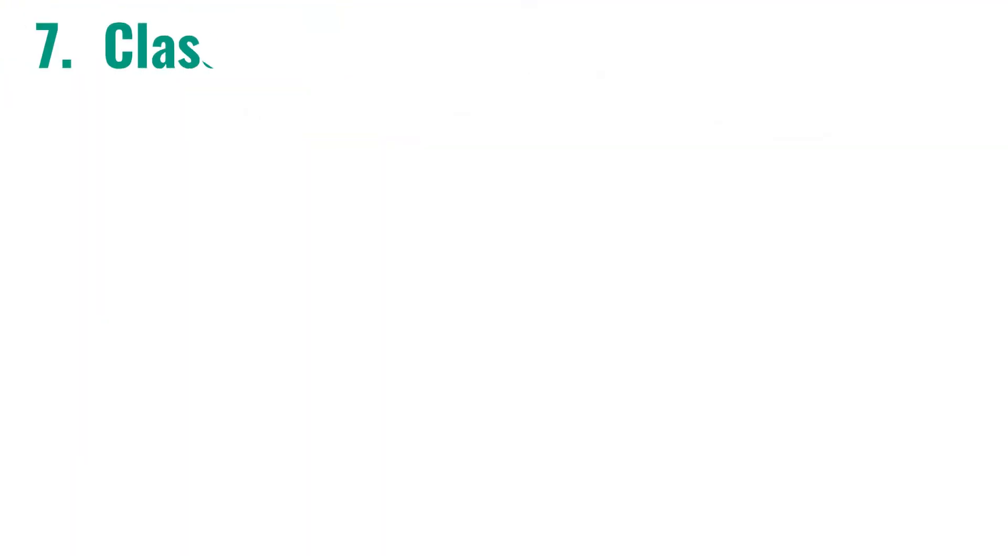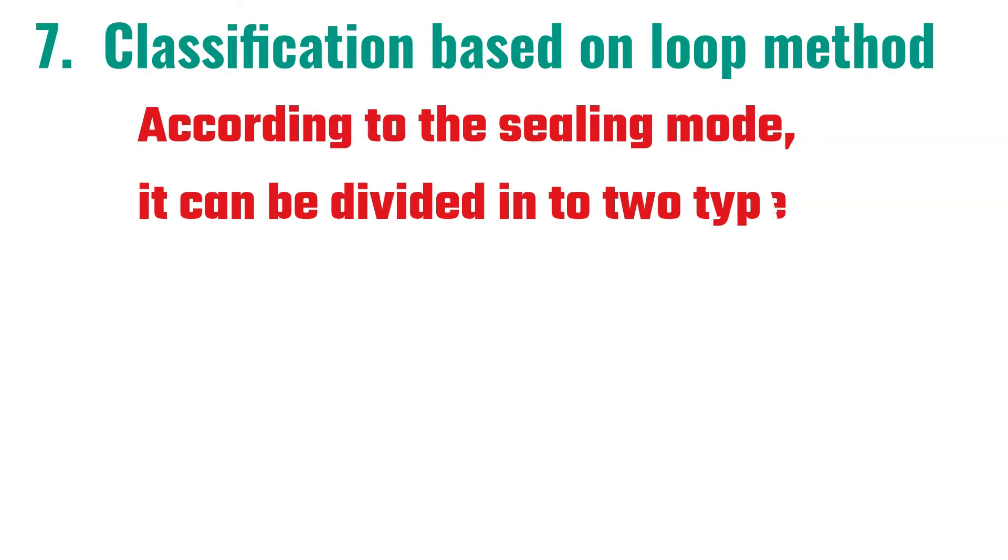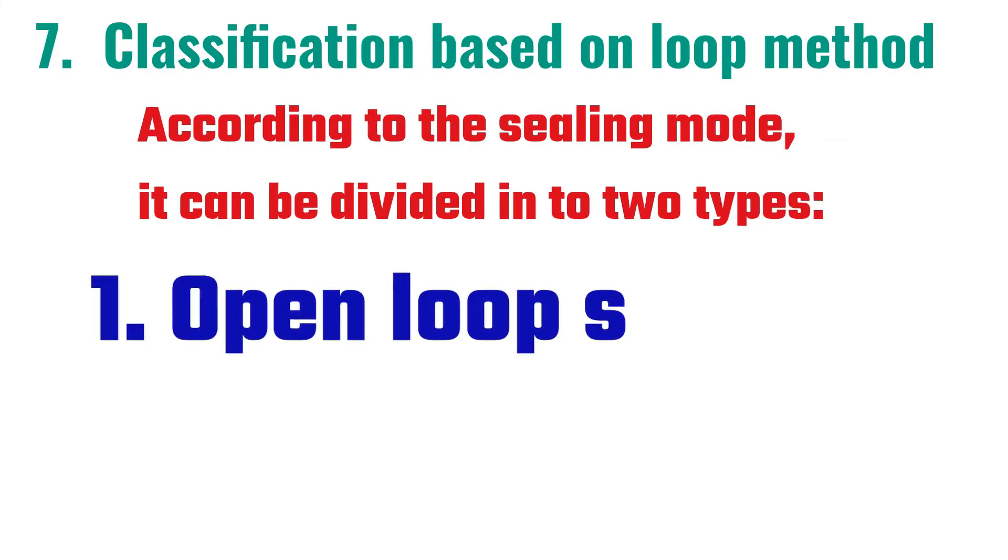Seventh classification based on loop method: according to the sealing mode, it can be divided into two types - one, open loop system; two, closed loop system.